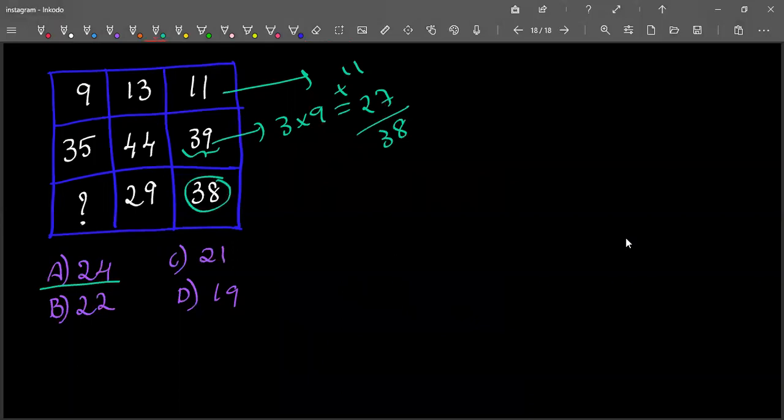You need to multiply three times nine, which is 27, and you need to add this eleven, which gives 38. In the same way, we need to multiply the digits in 44, which is 4 times 4 equals 16, and we need to add this 13 to 16, which gives 29.